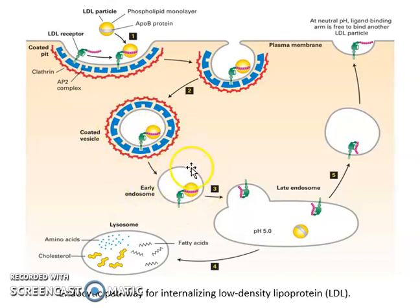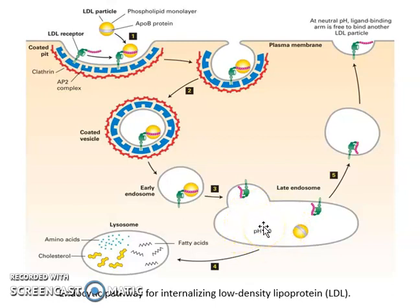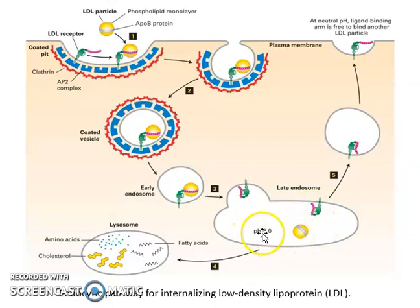After that, the coat proteins are shed, forming an uncoated vesicle called the early endosome. This early endosome eventually fuses with the late endosome. Here, because the pH of the late endosome is acidic — around pH 5.0 — the LDL receptor undergoes a pH-specific conformational change, causing the receptor and ligand to dissociate and the LDL to be released.